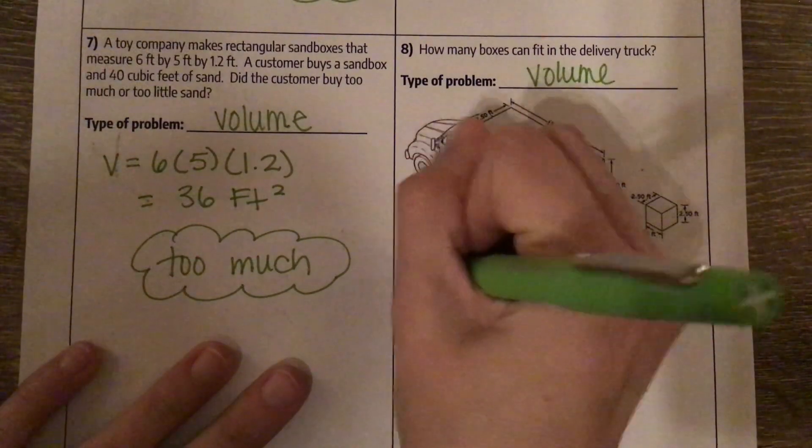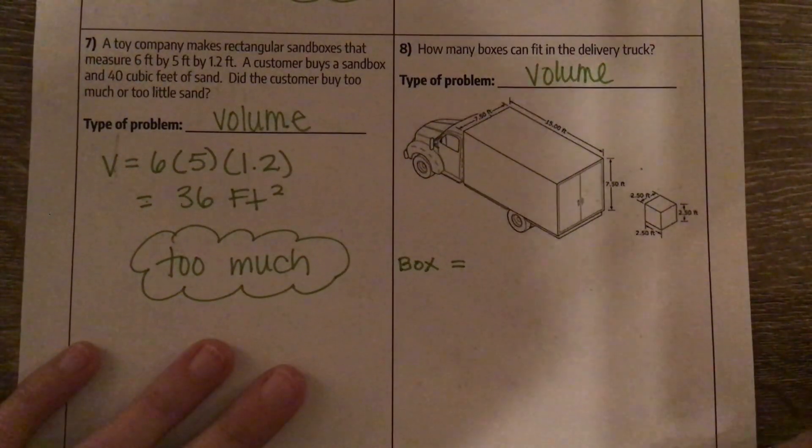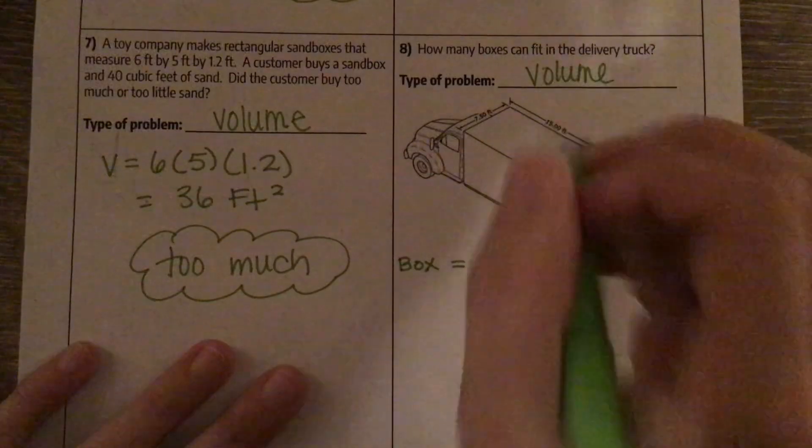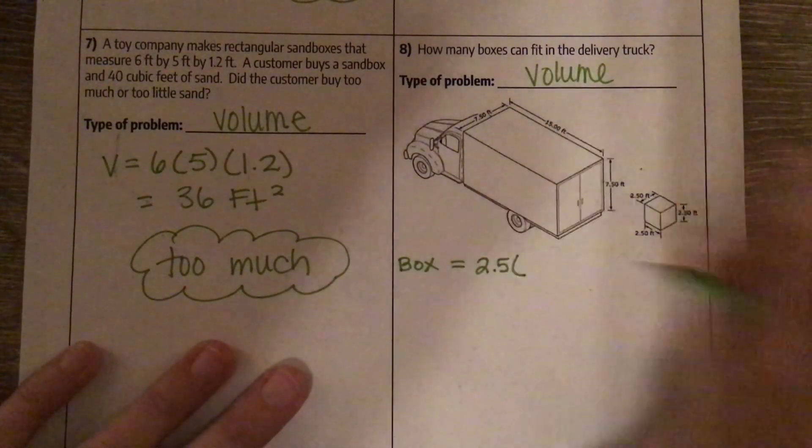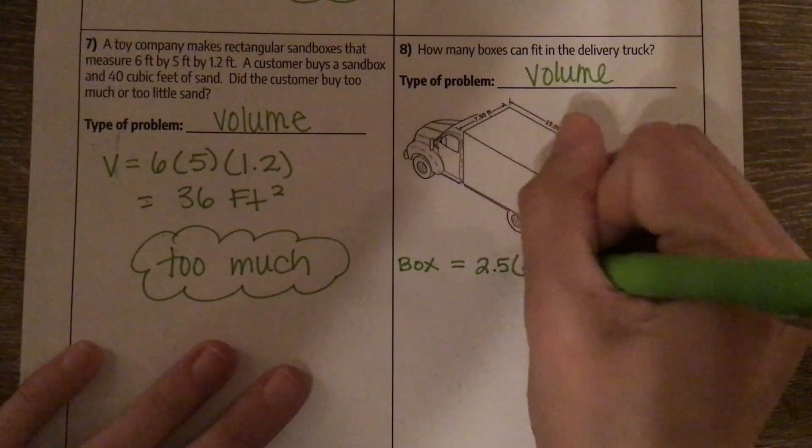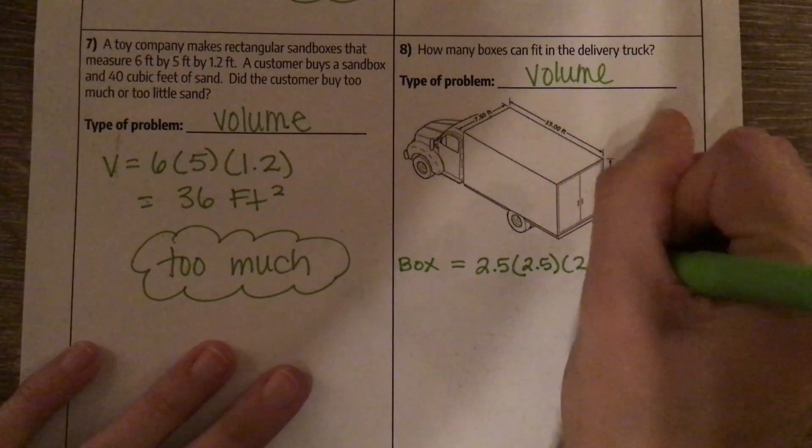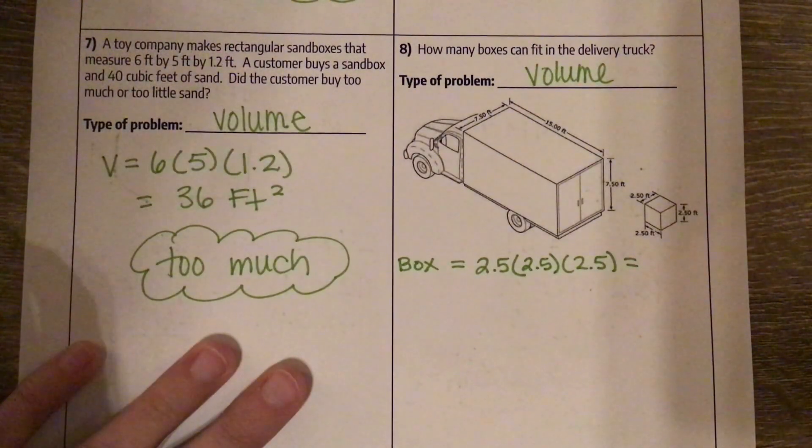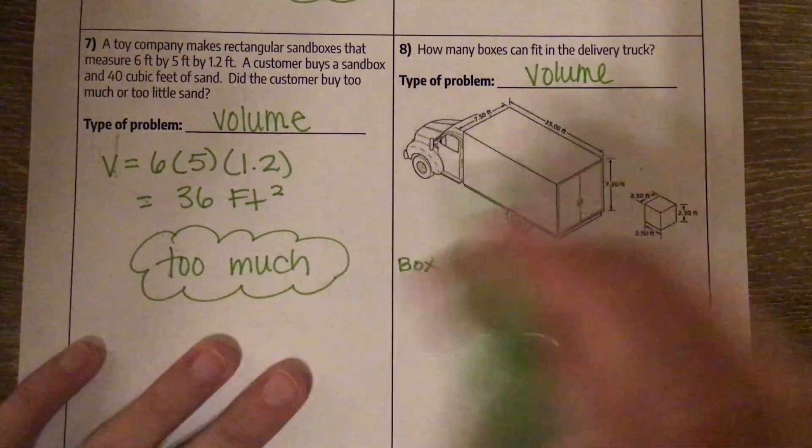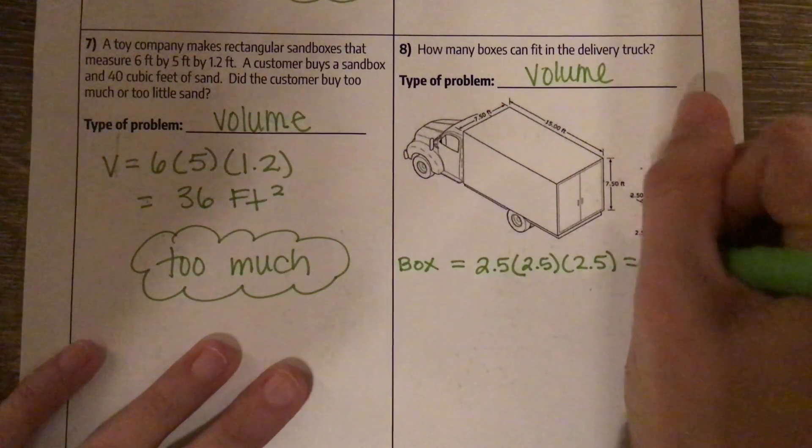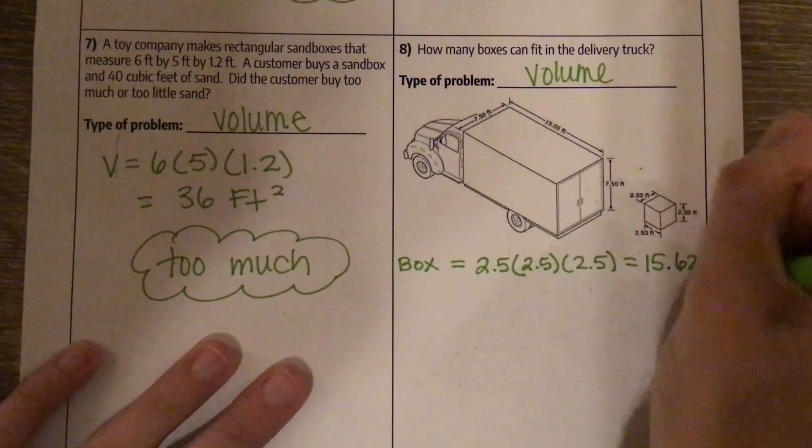So first, I'm just going to figure out the box's volume. It's kind of hard to see. We've got 2.5 times 2.5 times 2.5, which is 15.625.